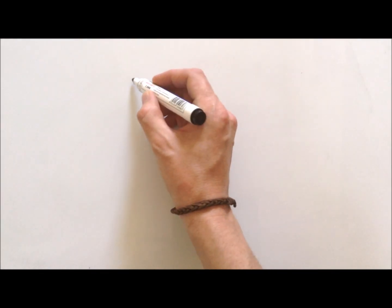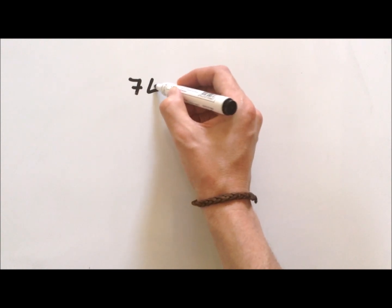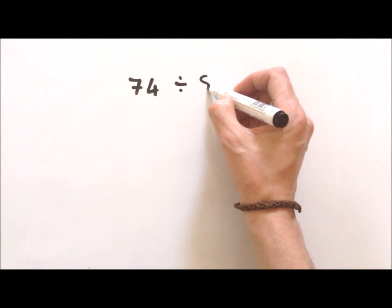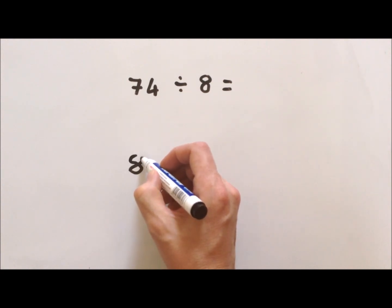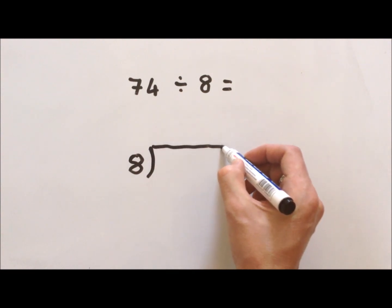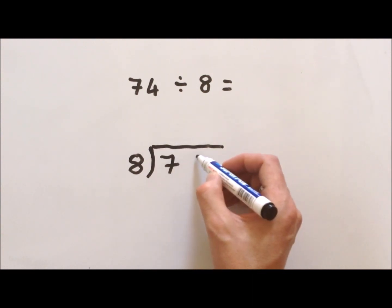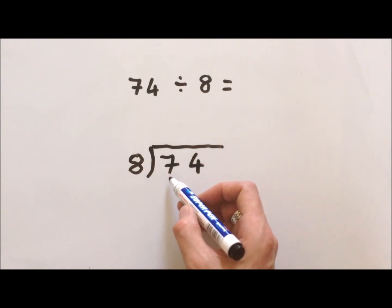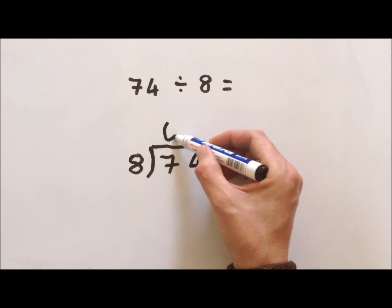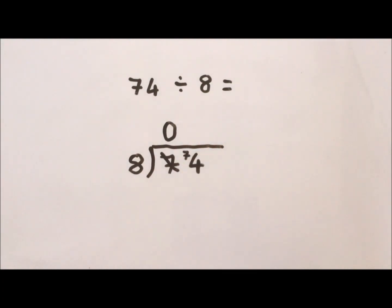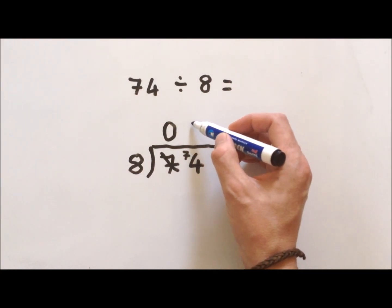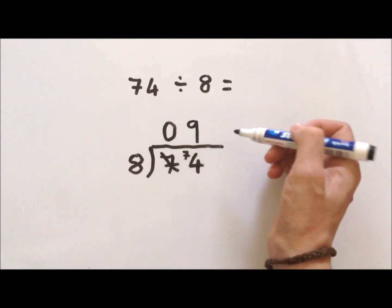Let's do another one: 74 divided by 8. Let's put it into our bus stop: 8 on the outside, 74 on the inside. How many 8s can we get out of 7? Close, but we can't do it. How many 8s can we get out of 74? If you know your times tables, 9 times 8 is 72, 10 times 8 is 80, so 9 here and we've got a remainder of 2.